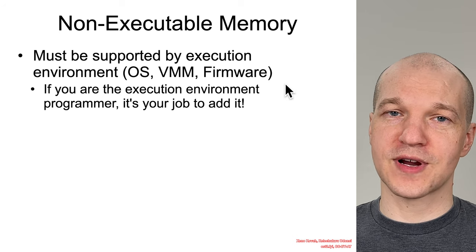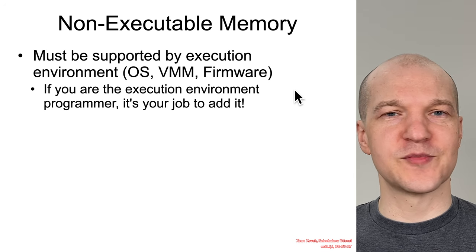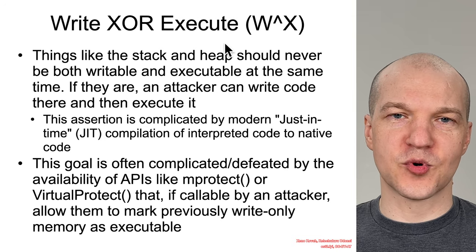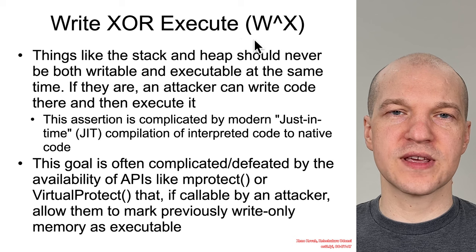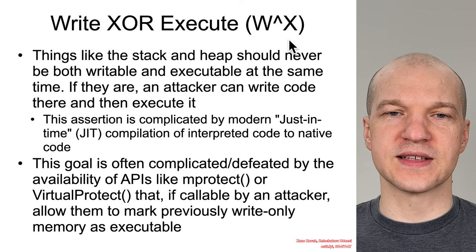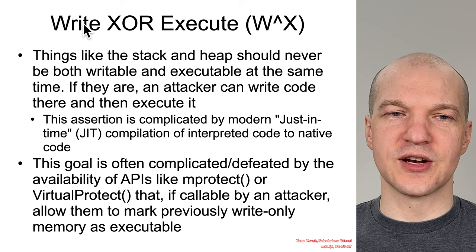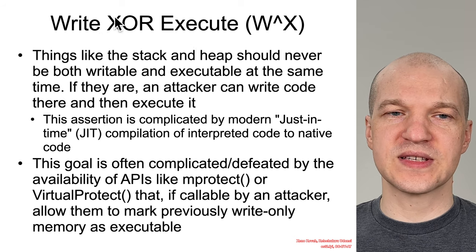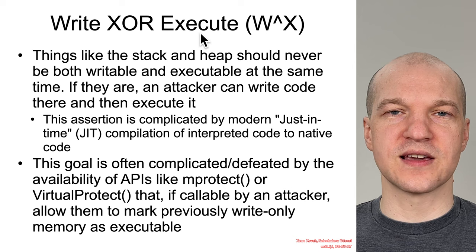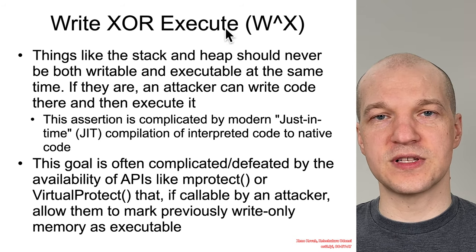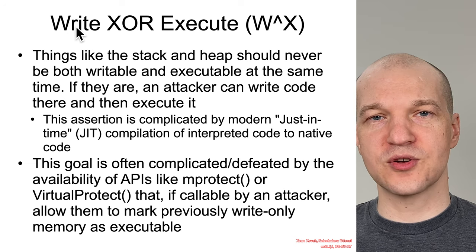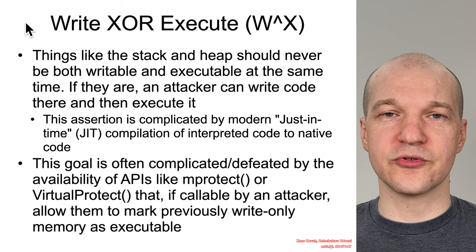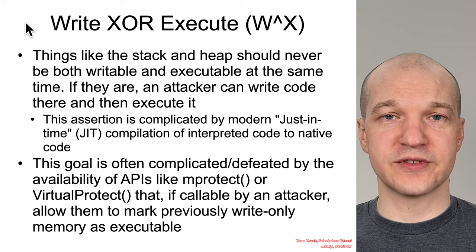If you are the programmer for the operating system, virtualization, or firmware, this would be your job to implement this exploit mitigation. The property people are trying to achieve is called write XOR execute. If you remember your truth tables — if write is one and execute is one, the result is zero, false. So basically this can only be true if one is set and the other is not. We want write with execute to be false, or execute with write to be false — executable memory that's not writable, or writable memory that's not executable.